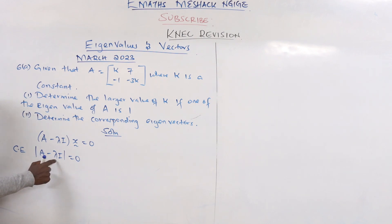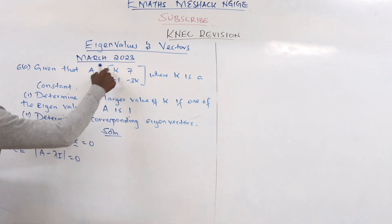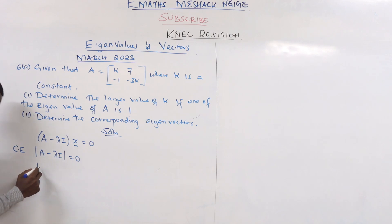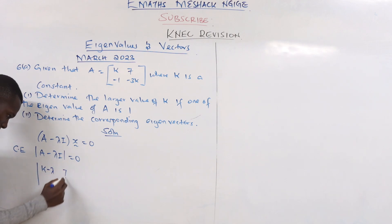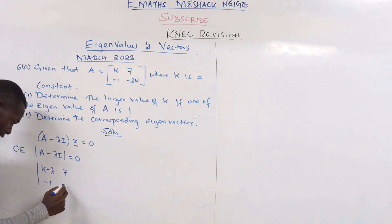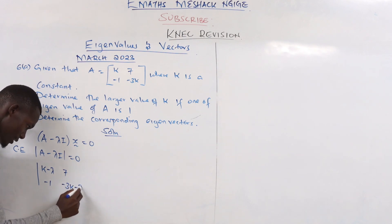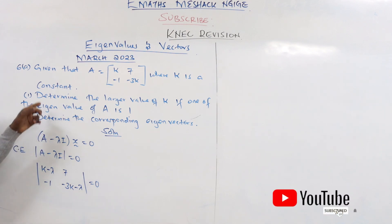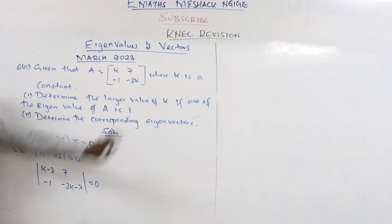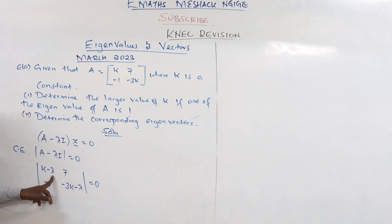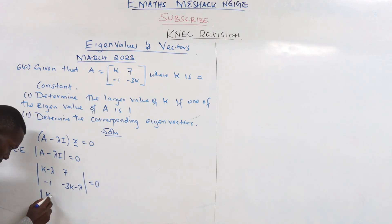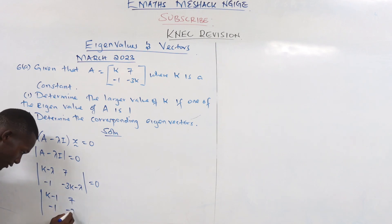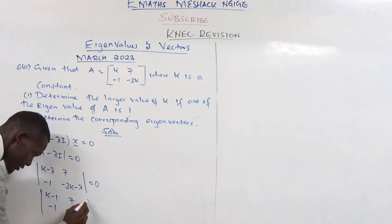The characteristic equation is formed by subtracting lambda from the main diagonal of A. Since we are told one eigenvalue is 1, we substitute lambda = 1 directly. This gives us the determinant of the matrix with entries (k minus 1), 7, negative 1, and (negative 3k minus negative 1), all set equal to zero.